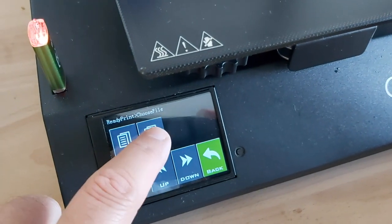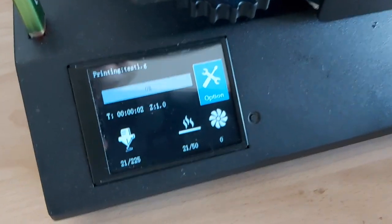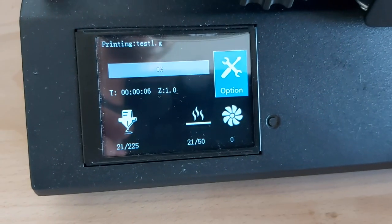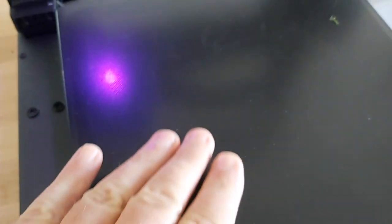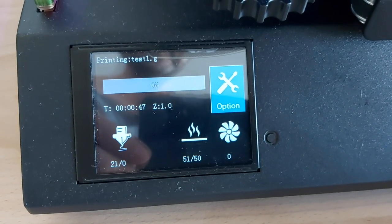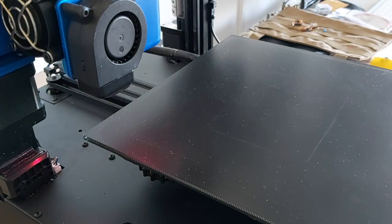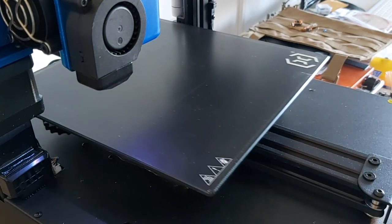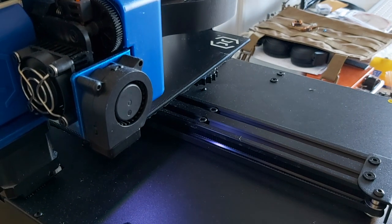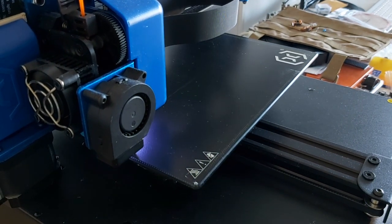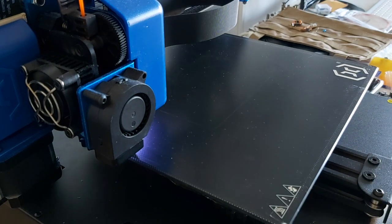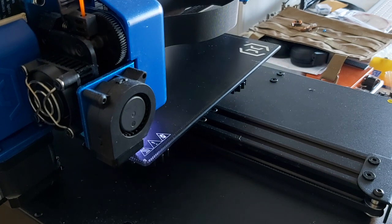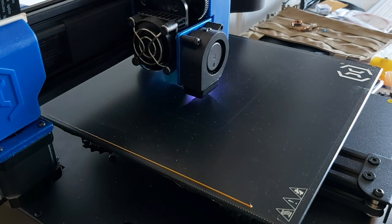The printer is ready, print test one. Now it's going to heat up the bed and the head for melting the filament. It's heating the bed first, that's pretty fast. The bed is the glass plate where the object is going to be printed. Now the head is going to heat up to melt the plastic. Plastic starting to come out, and here we go.